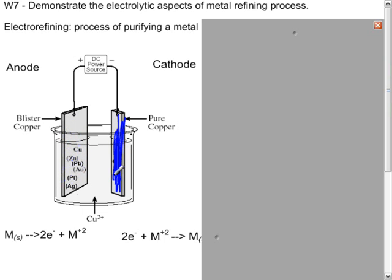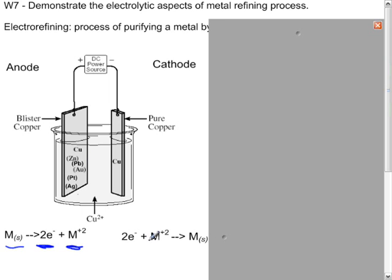Now we will plate from the anode to the cathode, but remember our blister copper is impure. What exactly is going to go on? We know the general reaction is that at the anode a solid metal gives off electrons to become the ion. At the cathode, electrons are added to the metal ion to become the solid.